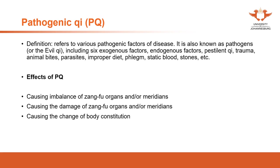As you can see from the definition, this kind of qi actually includes all the pathogens we have mentioned in the etiology in the previous videos. So pathogenic qi includes all kinds of pathogens, and these pathogens can cause disease of the human body. It can be internal or external — that is, exogenous and endogenous.